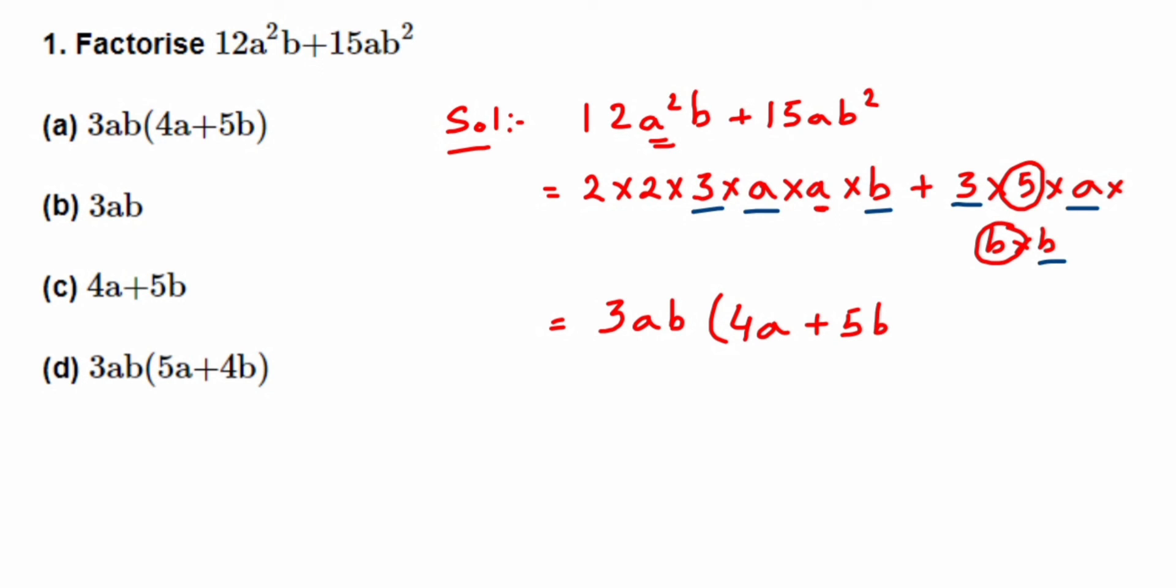So the answer here is 3ab(4a + 5b). That is option a is the correct answer here. So that's it. It was a simple question. I hope it's clear. If you have any question or doubt, you can drop a comment below. Thank you so much for watching.